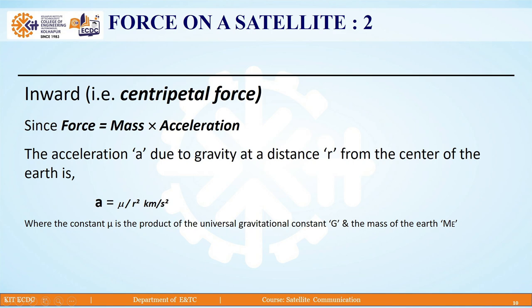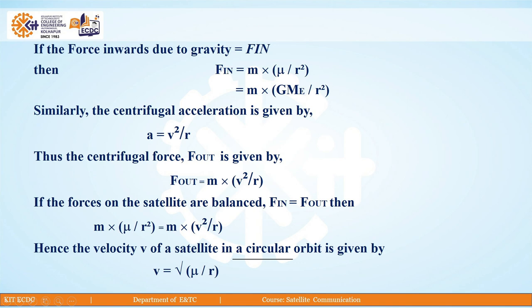The equation for the inward force, that is centripetal force, is derived as follows. Since force equals mass into acceleration, we place the value of acceleration a = μ/r², where acceleration is due to gravity at a distance r from the centre of the earth. The unit for this is km/s², where the constant μ is the product of the universal gravitational constant G and the mass of earth M_e. If the inward force due to gravity is F_in, then F_in = m × μ/r².